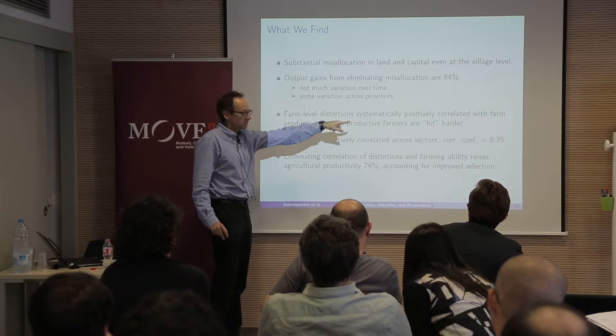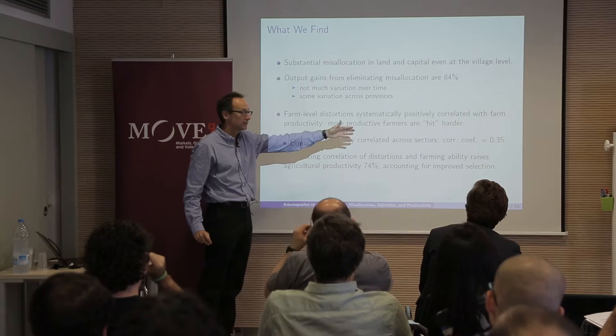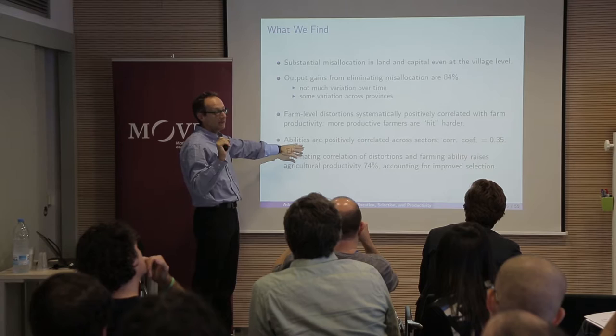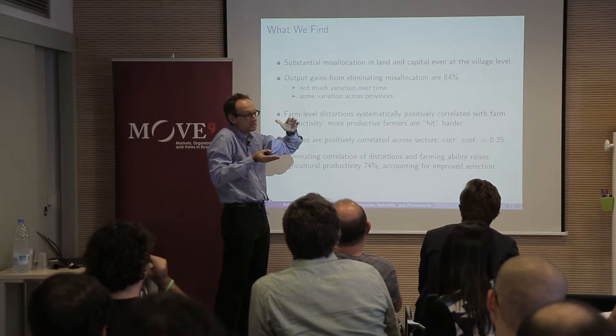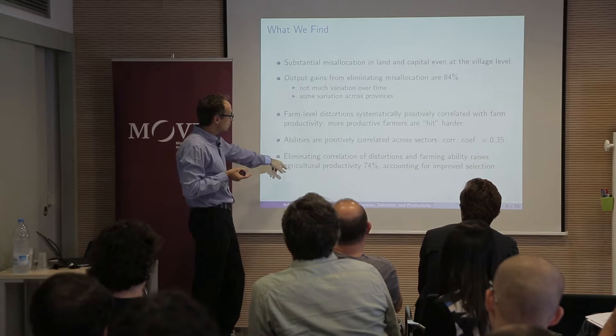These distortions are systematically positively correlated with farm productivity. In the two-sector model, the abilities in agriculture and non-agriculture are going to be positively correlated — not huge, but positively correlated. This is important because it determines who are the farmers that are leaving agriculture.